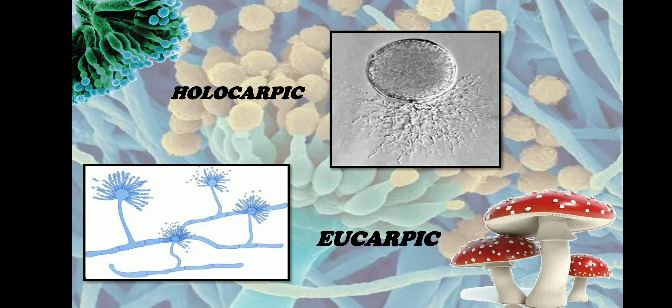The fungal thallus can be of two types: it could be holocarpic or it could be eukarpic. Let us see what is holocarpic and eukarpic.